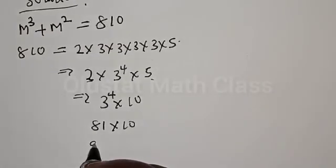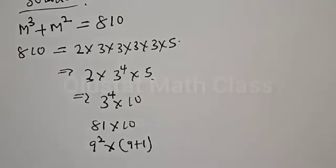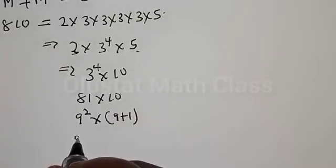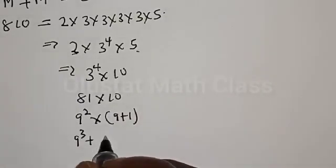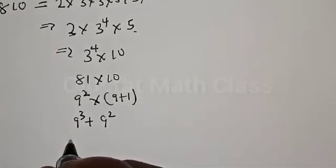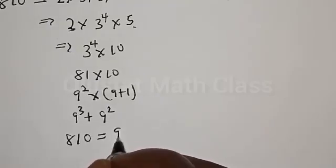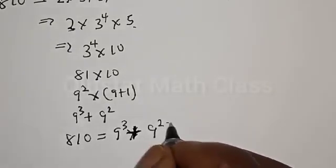And 81 is the same thing as 9 squared, then multiplied by 10 can be written as 9 plus 1. Let's open this bracket. We have 9 squared multiplied by 9, that is 9³, plus 9 squared multiplied by 1, which is 9 squared. Therefore, 810 can be expressed as 9³ plus 9 squared.